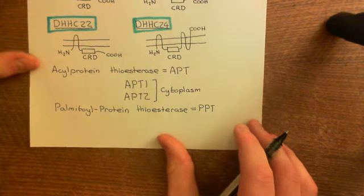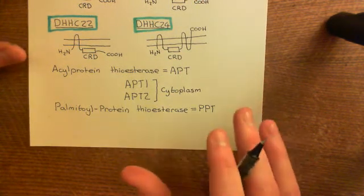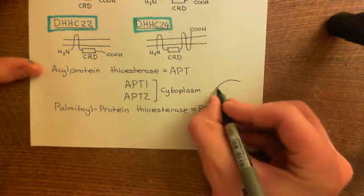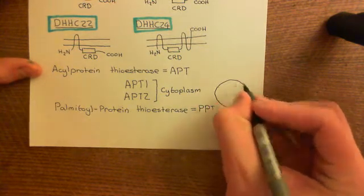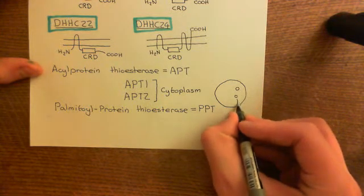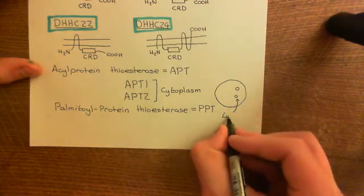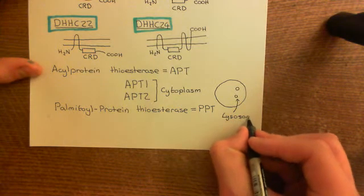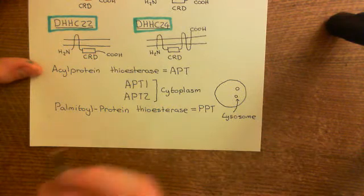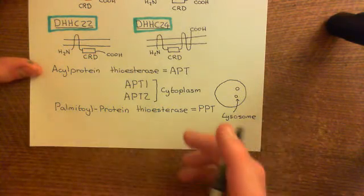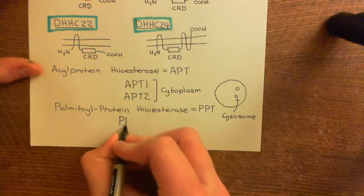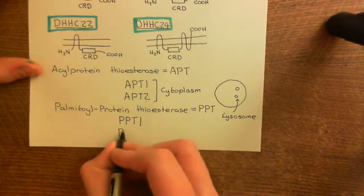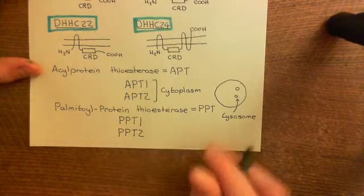When you wish to destroy proteins, you can either send them for degradation by the proteasome, or they can be degraded by lysosomes. Lysosomes are membrane-bound structures within the cell that are full of enzymes which degrade proteins. One of the enzymes within lysosomes are palmitoyl protein thioesterases. There are two members: palmitoyl protein thioesterase 1 (PPT1) and palmitoyl protein thioesterase 2 (PPT2).